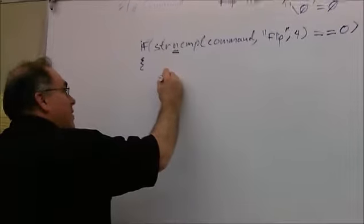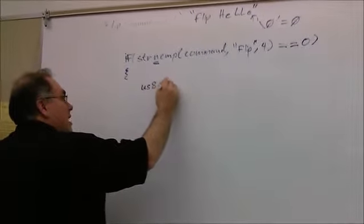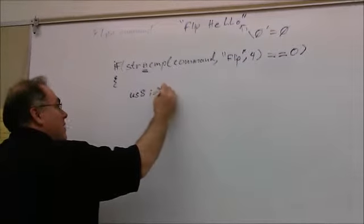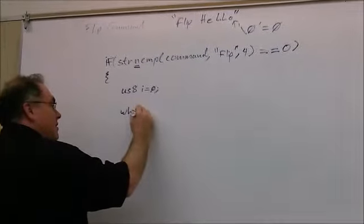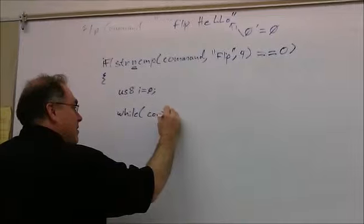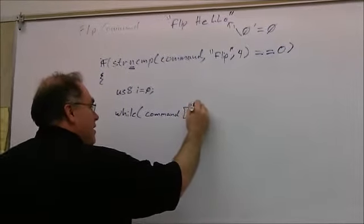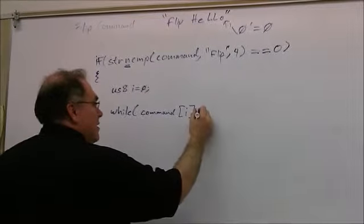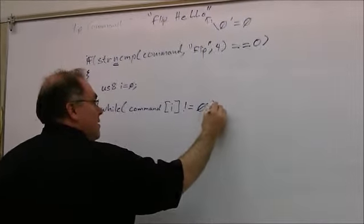So we're going to create an iterator variable called i and we're going to start out with i equal to zero. And we're going to say while command at position i is not equal to zero, and then loop.